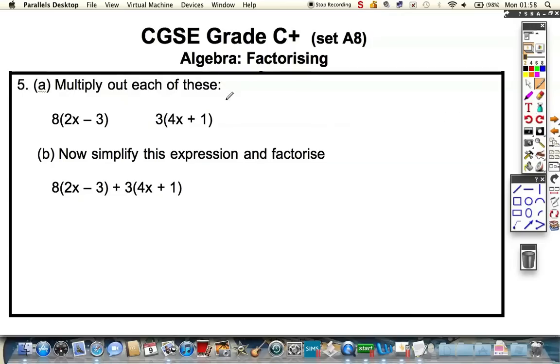Last question comes in a couple of parts, so you might want to go ahead and try these. The first bit is to multiply out. The second bit is simplify and factorise. Okay. So if we expand the first bracket, we're going to get 8 times 2x is 16x. And 8 times minus 3 is minus 24. Quite straightforward. Same thing here. 3 multiplied by 4x. And 3 times 4x is also 4x plus 1. So 3 times 4x is 12x. 3 times 1 is plus 3. So the first bit was quite straightforward. Done.